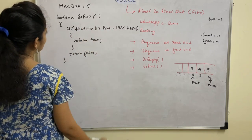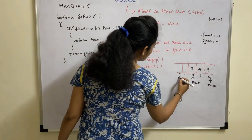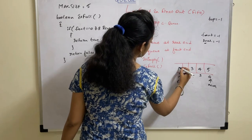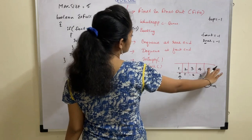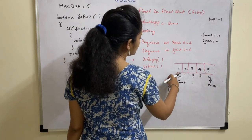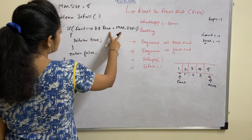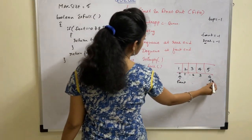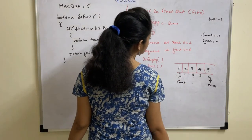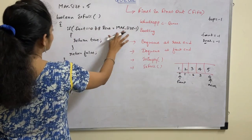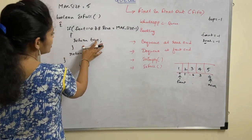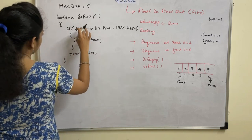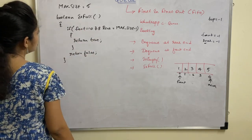The isFull condition checks whether the Queue is full. If front equals zero, that means front is pointing to location zero. Assume that we have already inserted five elements into the Queue, and front is pointing to zero. The second condition is rear equal to max minus one — so max minus one is four. Since both conditions are satisfied, it indicates that the Queue is full, and it will return true. If this condition fails, then it returns false.